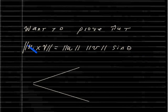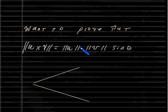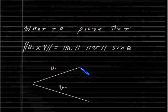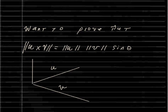I want to show that the cross product of u and v has norm equal to the norm of u times the norm of v times sine theta. So if u and v are vectors — suppose we have vector u here and vector v here — then u cross v is going to be a vector perpendicular to both u and v. This is the cross product of u and v.